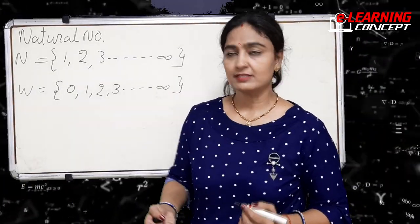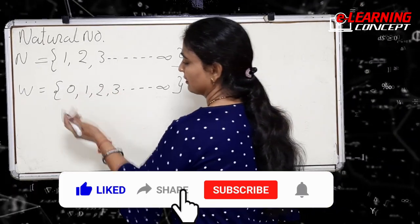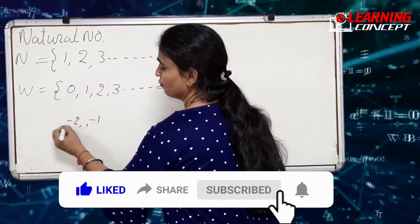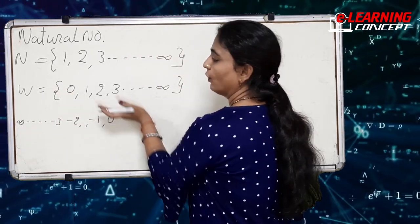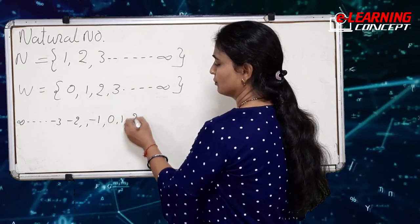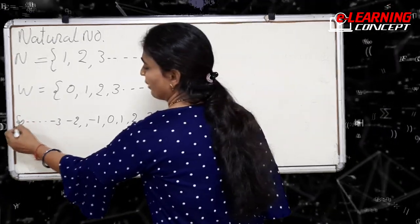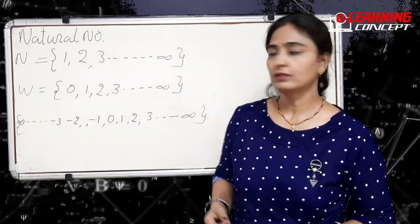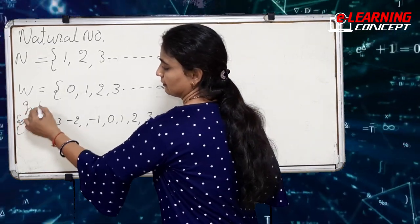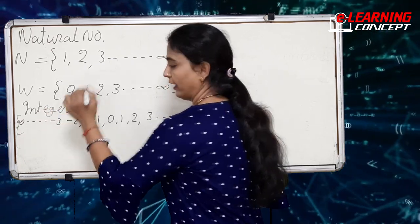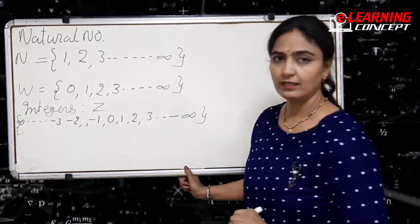There are many numbers like negative numbers. If we add all the negative numbers like minus one, minus two, minus three, up to minus n, into the whole numbers zero, one, two, three, up to n, we get a new set of numbers which is called integers. Integers are denoted by capital Z.